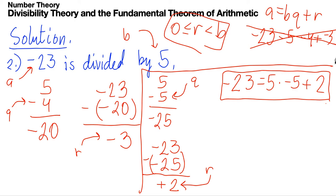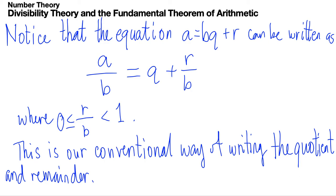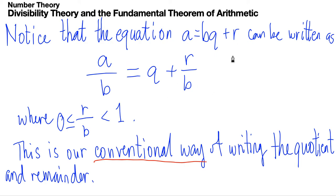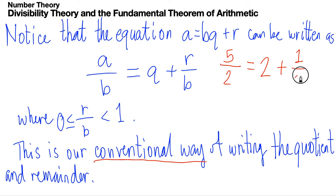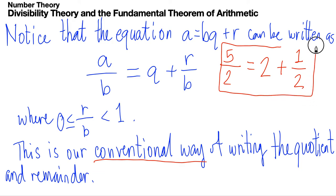To end this video, notice that in conventional arithmetic, the equation a equals b times q plus r can be rewritten as a over b equals q plus r over b, where the fractional part r over b is less than 1 but greater than or equal to 0. For example, 5 divided by 2: there are two 2s in 5 with a remainder of 1, so 5 over 2 equals 2 plus one-half as a mixed number.